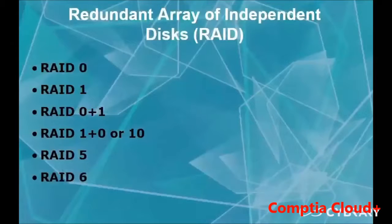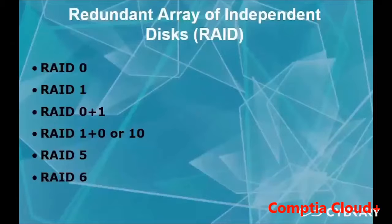RAID 1, we also have RAID 0 plus 1 and 1 plus 0, also called 10. We have RAID 5 and RAID 6. Each one of these are very important and each one provides redundancy for the network in case there is a disaster to a particular hard drive.